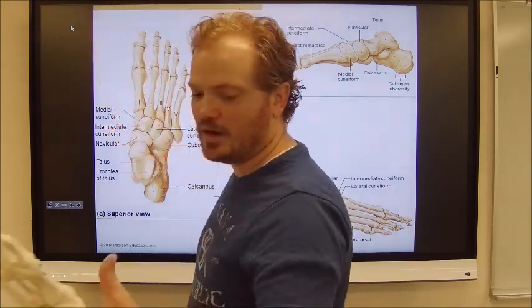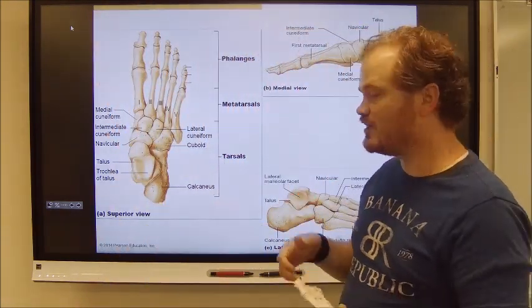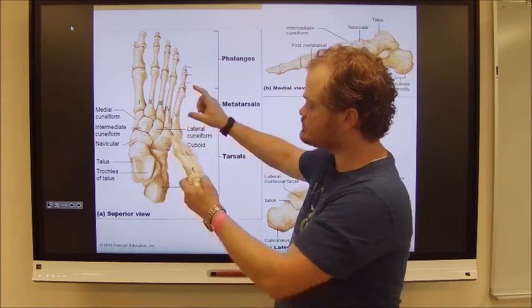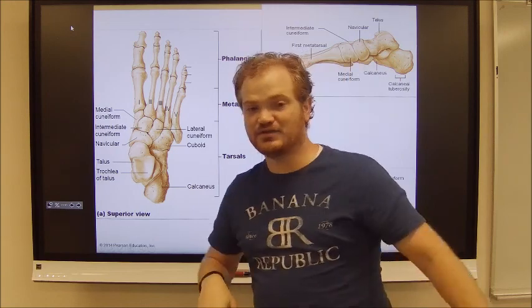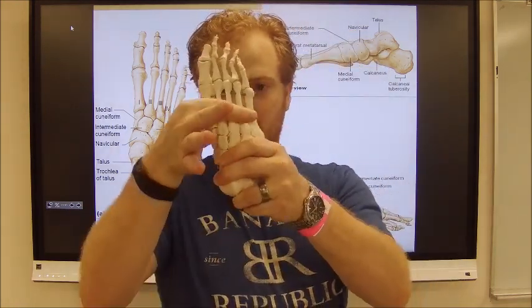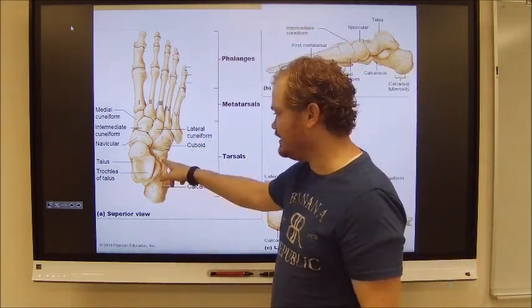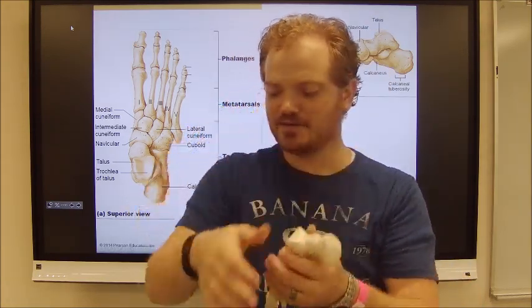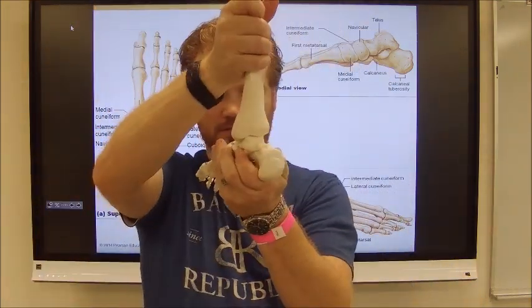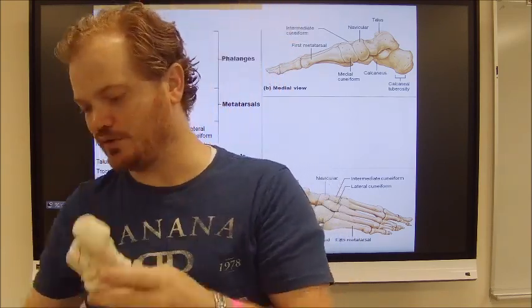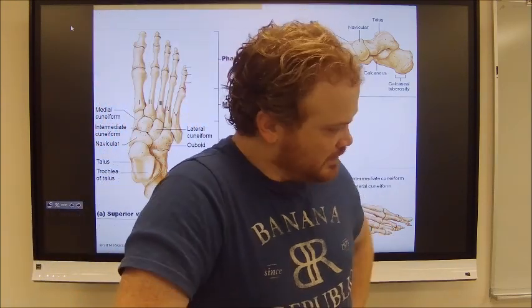Last but not least, the foot. These are the tarsals, metatarsals, and phalanges — as opposed to carpals, metacarpals, and phalanges in the hand. The key bones to know are the calcaneus — the big heel bone in the back — and the talus, which articulates with the tibia. Know those two and you're set. That covers most all the parts and pieces of the skeleton you need for this lab. Be expecting a quiz soon.